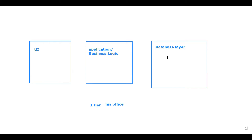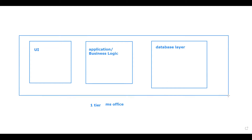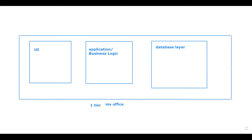If I want to filter — say, find a particular person's name in MS Excel — I can filter, and my business logic or application layer is working. From the database, it shows me only the data I want. So everything is on the client machine. When all three layers are packed as one unit on one machine, this is called one-tier architecture.